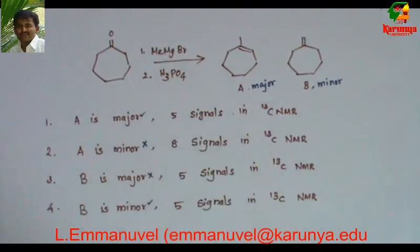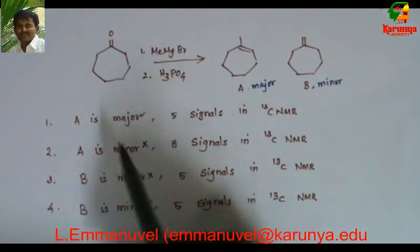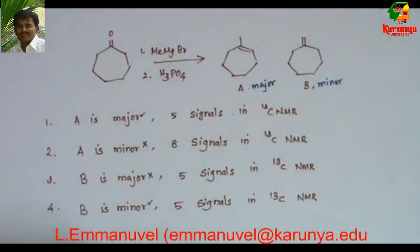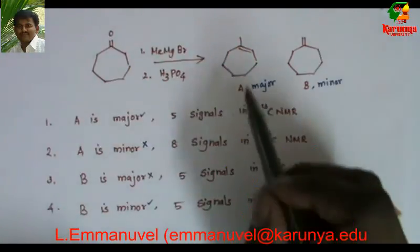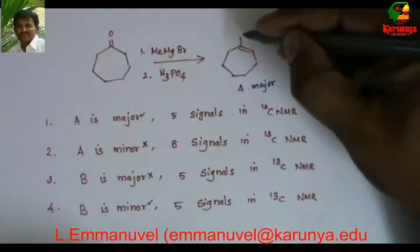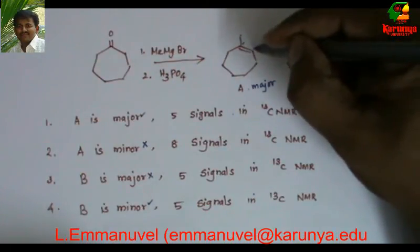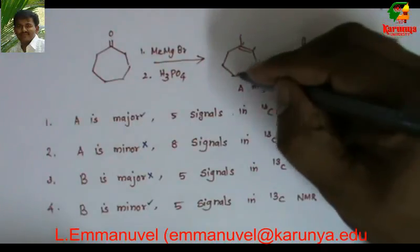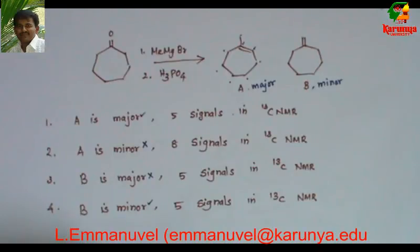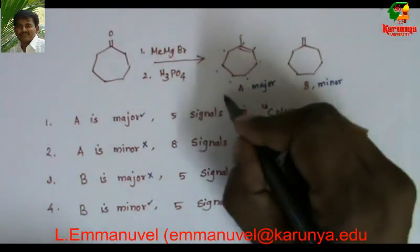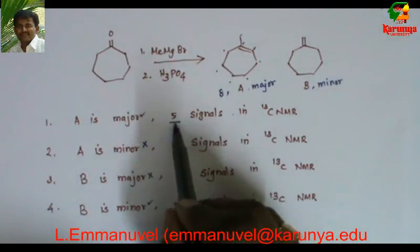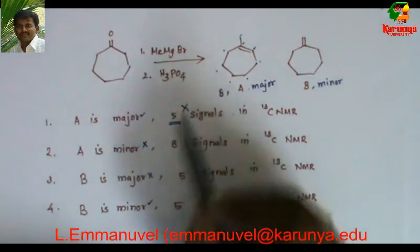Now what about the second part of the statement? A is major and it gives five signals in C-13 NMR. Let us count the number of signals in C-13 NMR for compound A: 1, 2, 3, 4, 5, 6, 7, 8. There is no symmetry, so the number of signals should be 8. But in this statement they mentioned 5, so this is wrong.